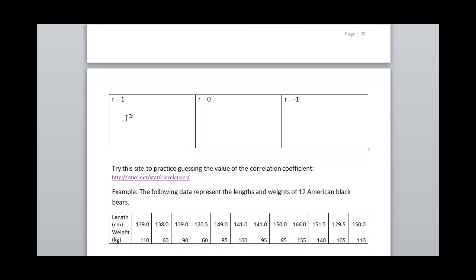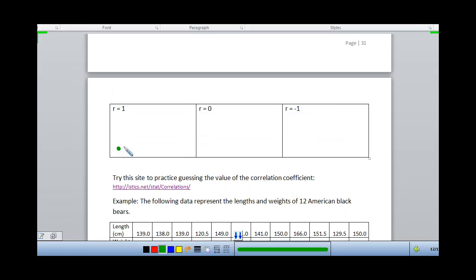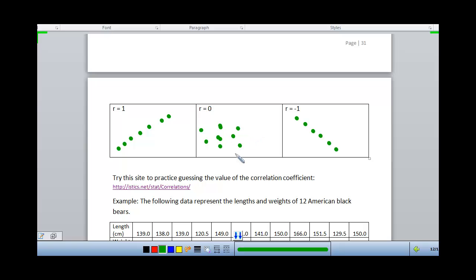Data that has a perfect positive relationship will have all of the points fall exactly on the line. A perfect negative relationship looks similar, but that line has a decreasing slope. And at zero, we've got just that fuzzy cloud of data — there's no clear linear relationship there.